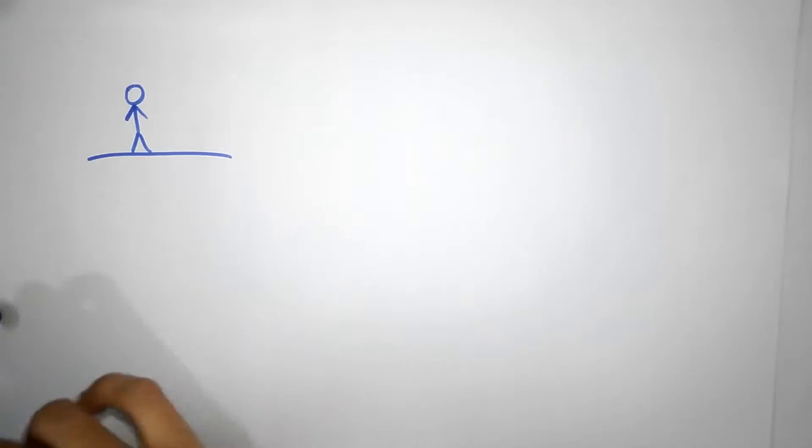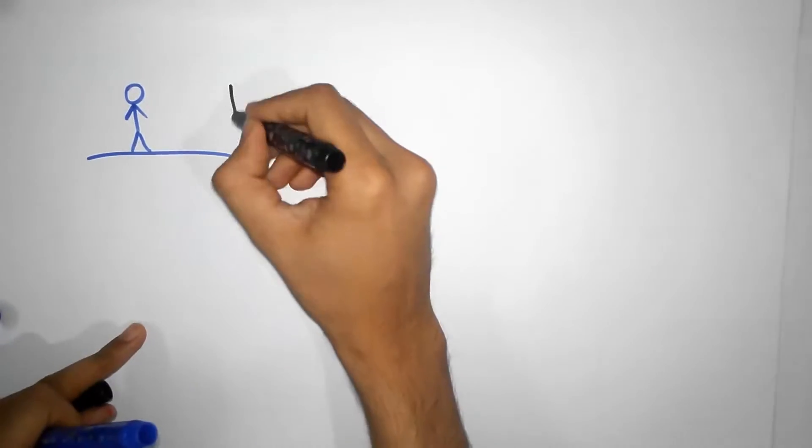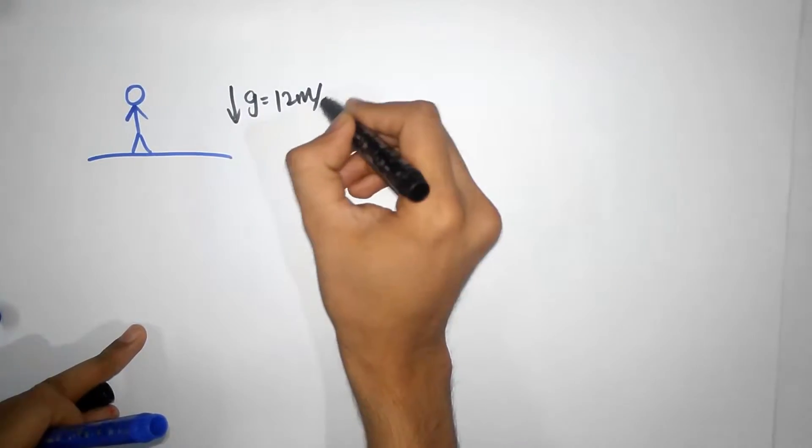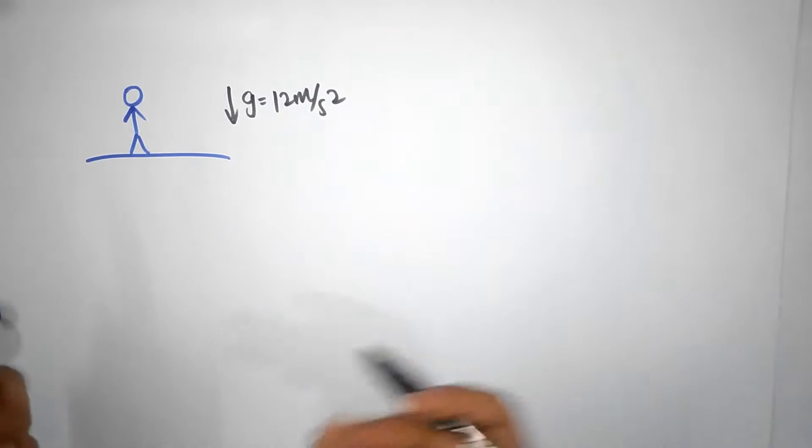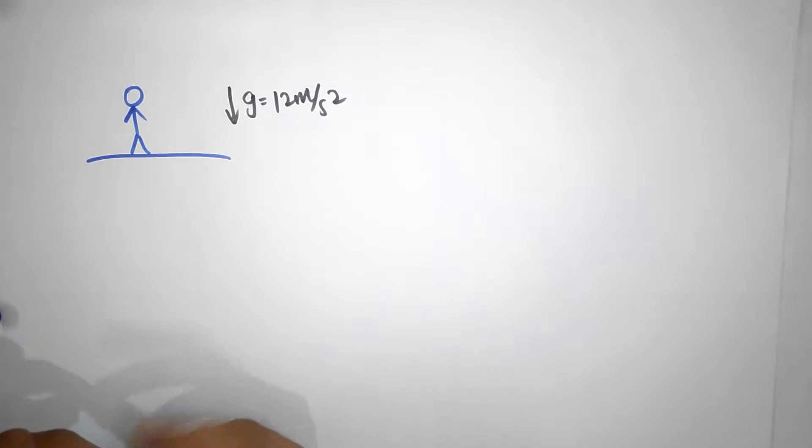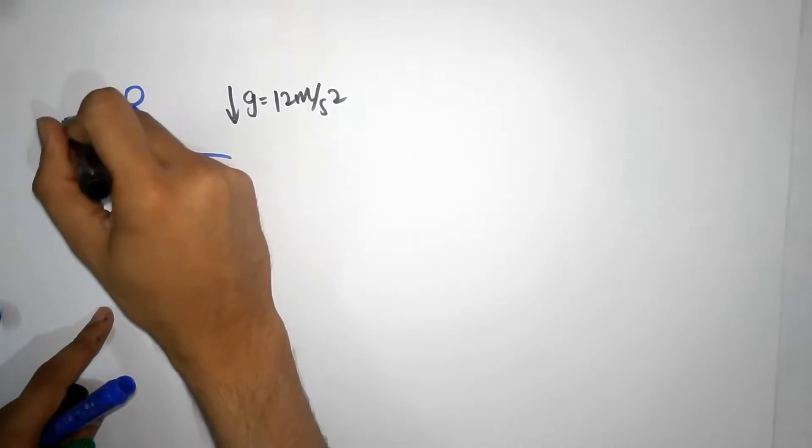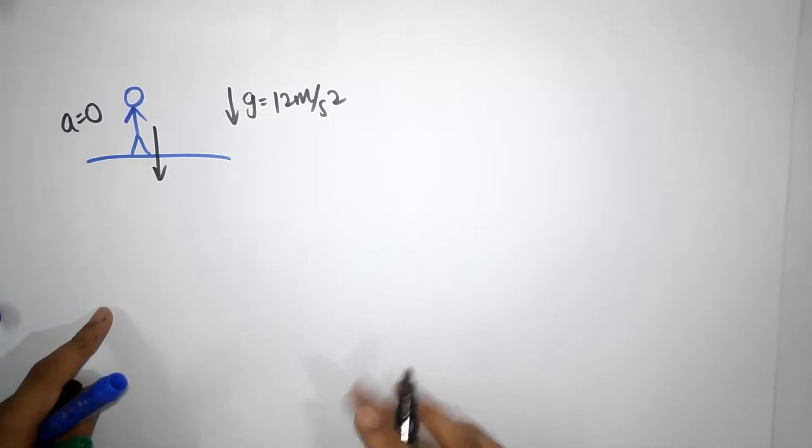A planet which has gravitational acceleration downwards of 12 meters per second squared. Some planet bigger than the Earth or something more massive than the Earth, and it has an acceleration of 12 meters per second squared. There's going to be a gravitational force and you have no acceleration, your acceleration is zero.